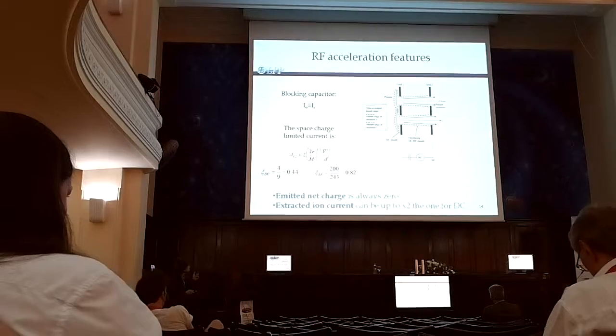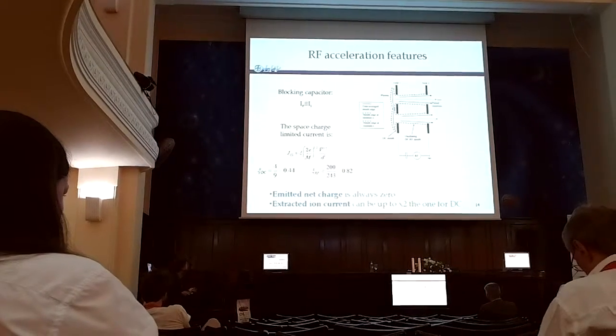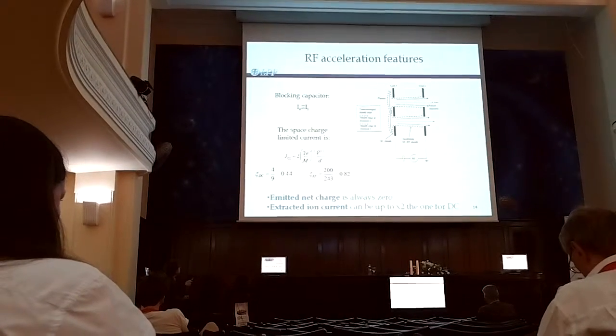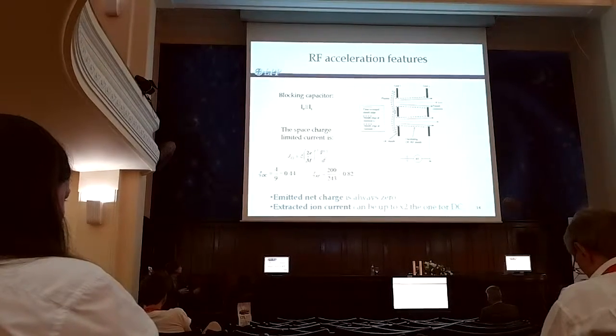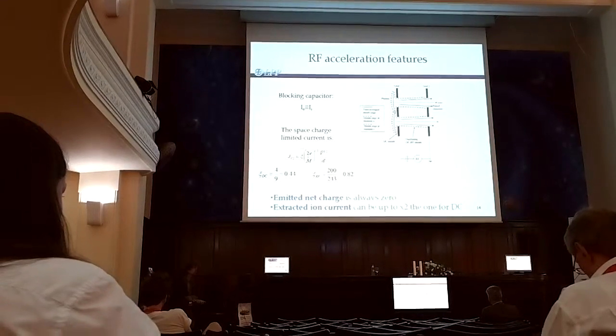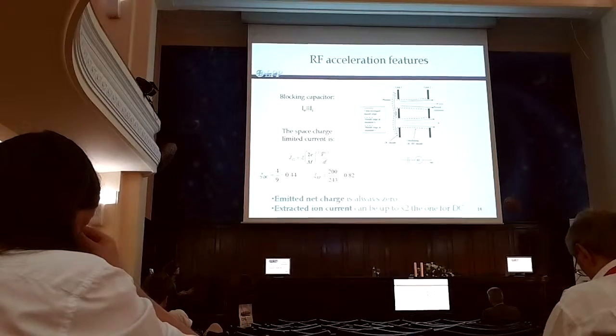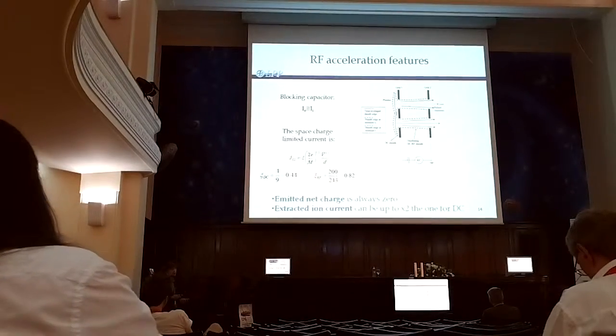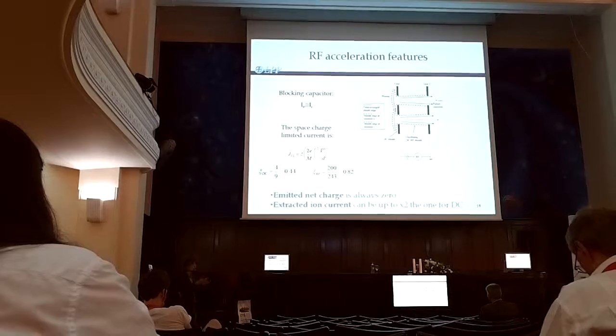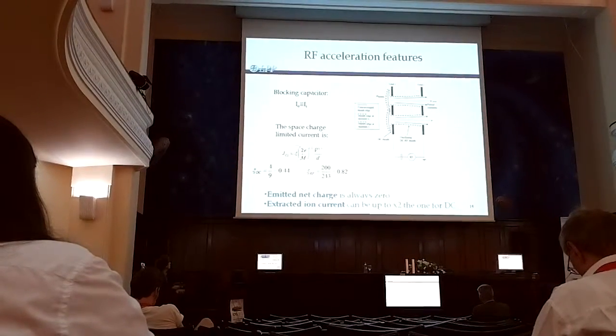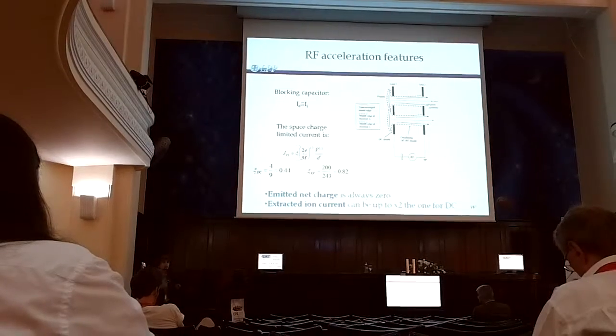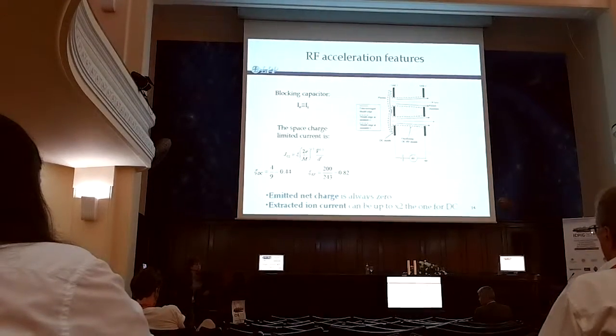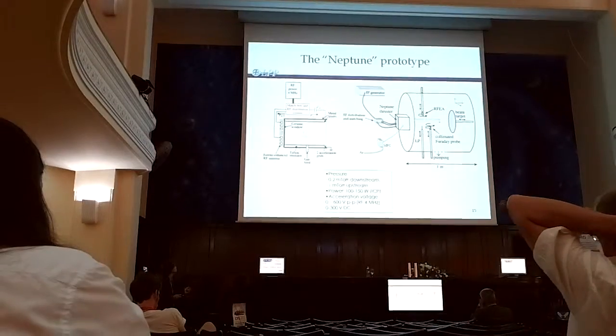And, there are two very important features of acceleration that I should mention. You have still the capacitor here, which means that you have no DC current. So, everything you emit, you emit equal charges. And, another feature is that, due to the presence of electrons sometimes in the sheaths, you decrease the space charge. And, it's shown that, actually, you can double the current with the same extraction system, the ion current that can be extracted in such a system.